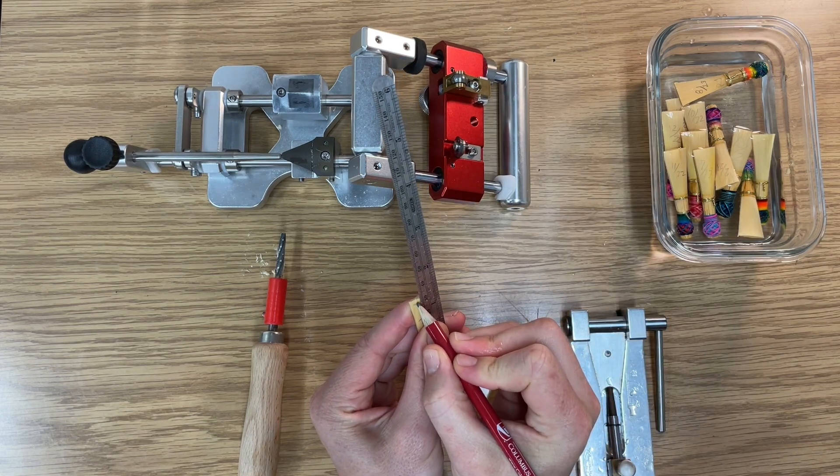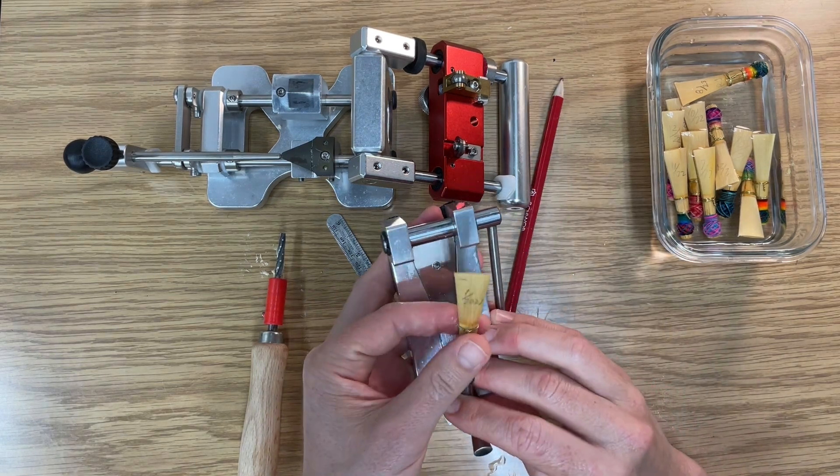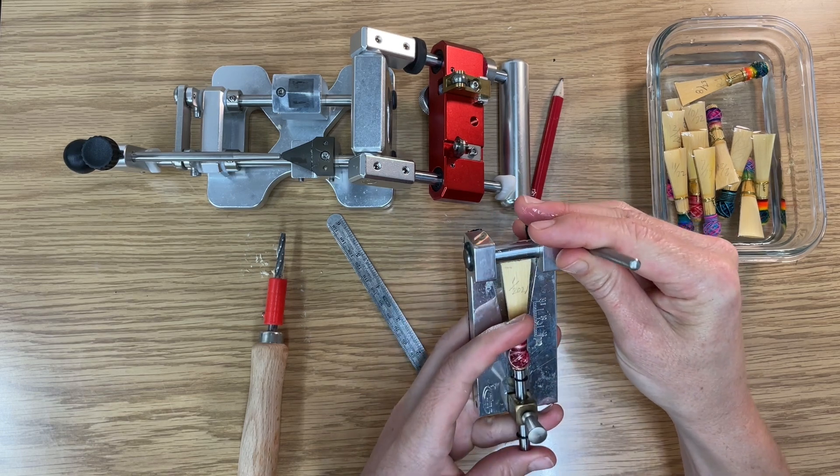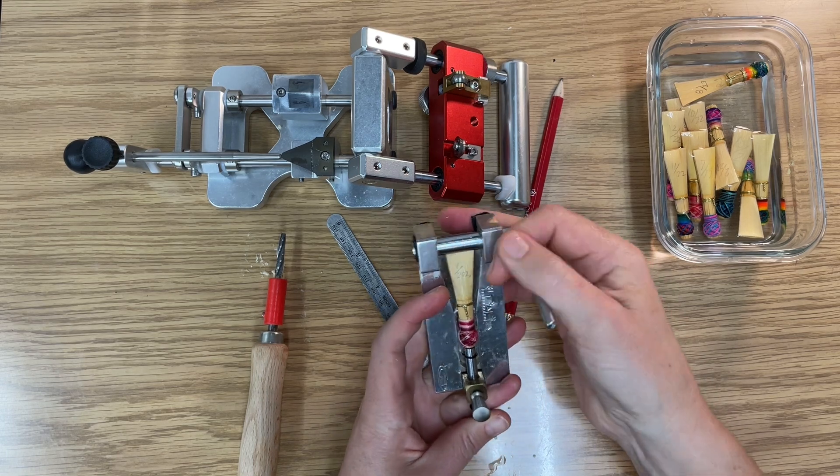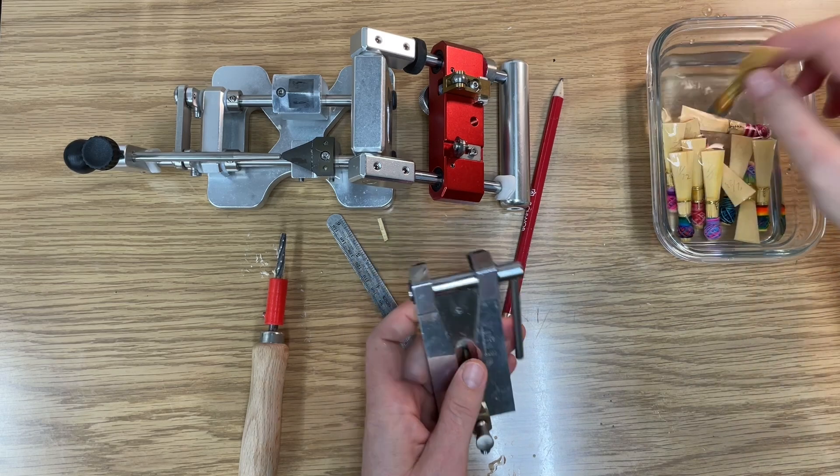So I'm going to measure 28 here, mark it at the tube, and I'm going to use my tip clipper to clip it right at 28. Make sure it's on there straight. Gently clip the tip and then I'm going to put it back in to soak just a little longer.